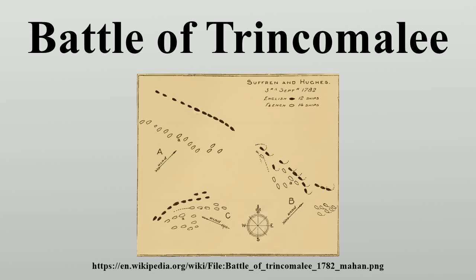Thirty minutes later Ajax was forced to withdraw with heavy damage and was replaced by Artésien. An hour later the situation became critical when Héros' mainmast came crashing down, and Suffren was forced to scramble to make sure the British did not think that he had struck his colours. He had also run out of ammunition, having fired 1,800 rounds at the British ships, and continued to fire powder alone in an attempt to fool the enemy. Battle on the ends of the line went more in favour of the French. Isis, Worcester, and Monmouth were badly damaged, and Exeter, whose captain was killed in the action, was disabled.